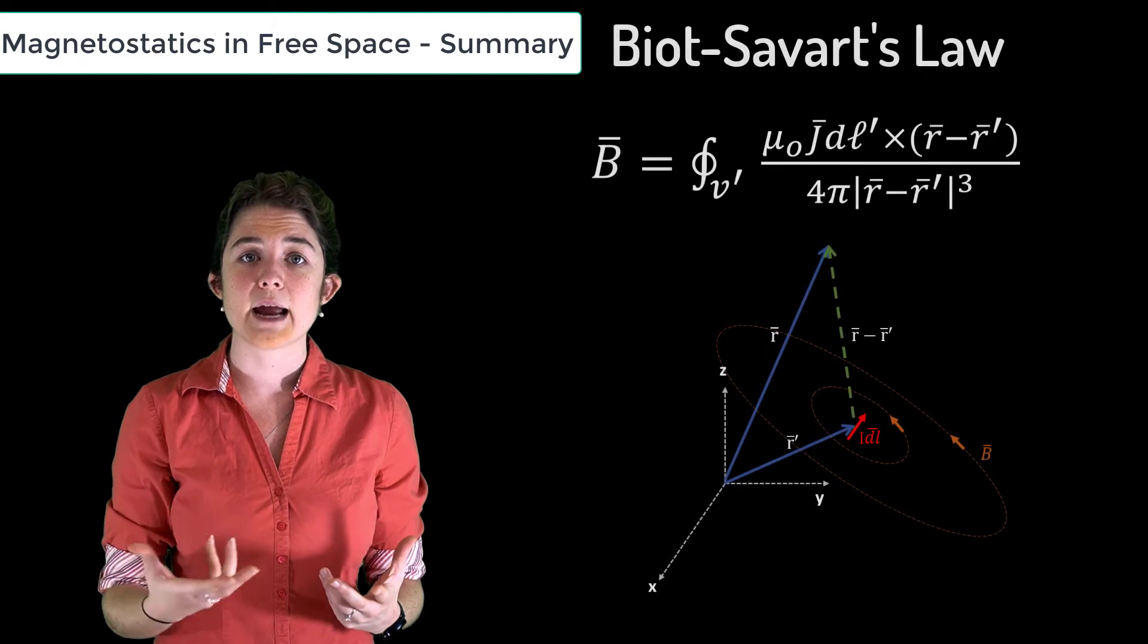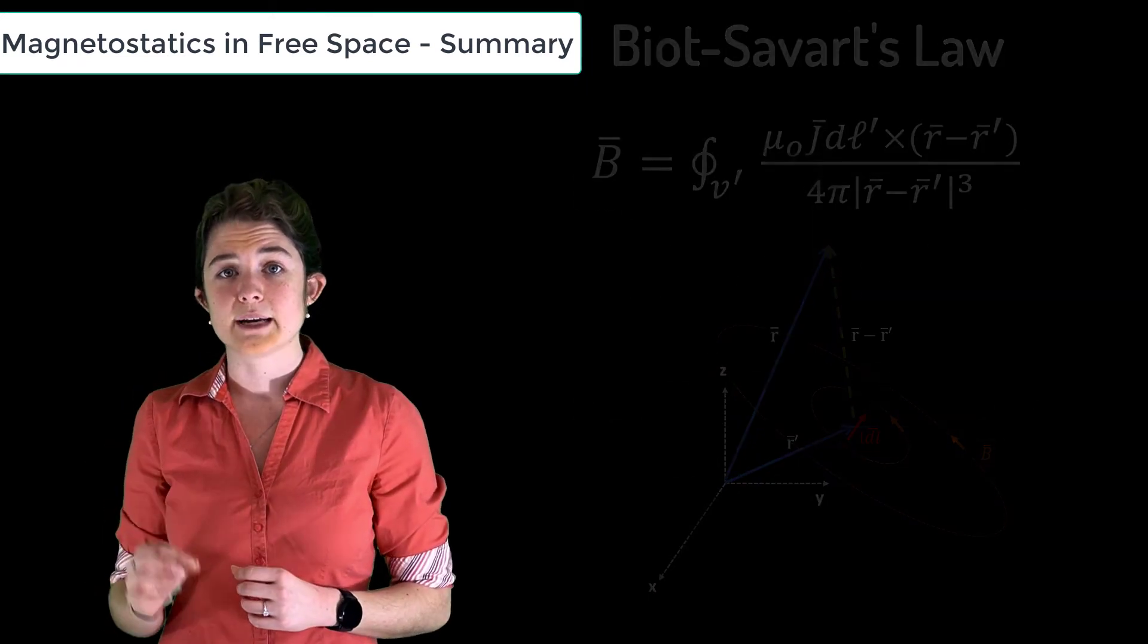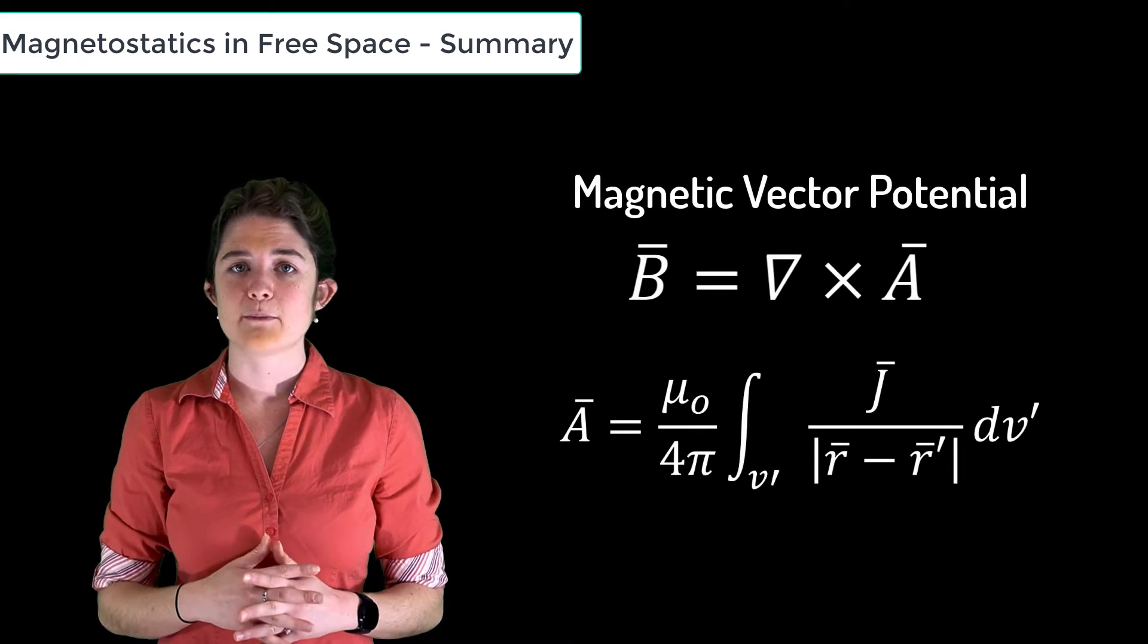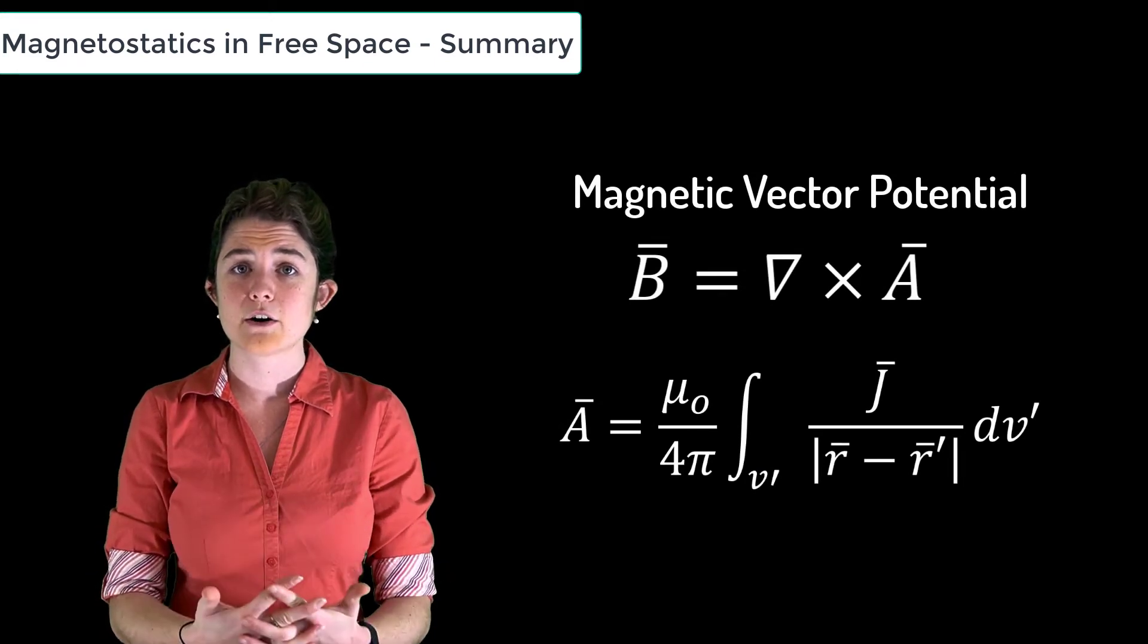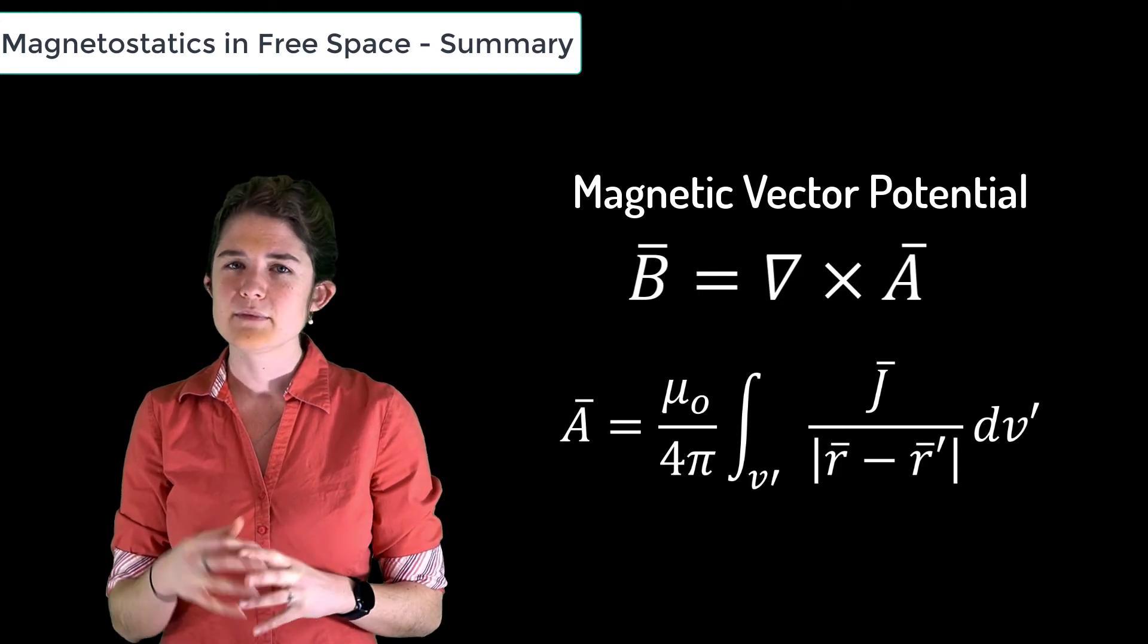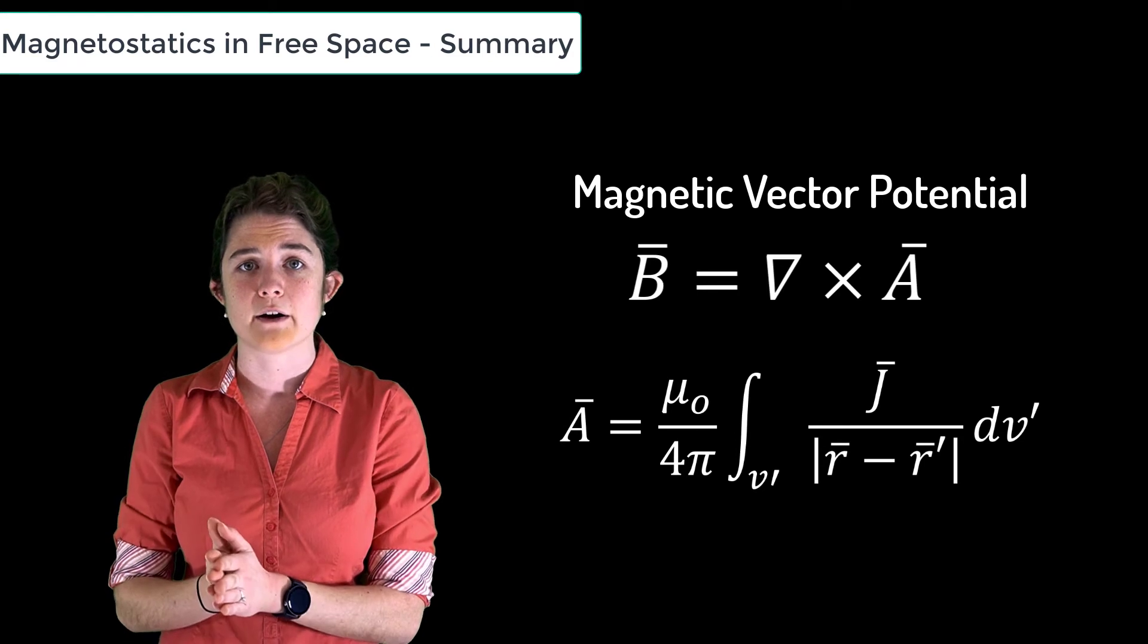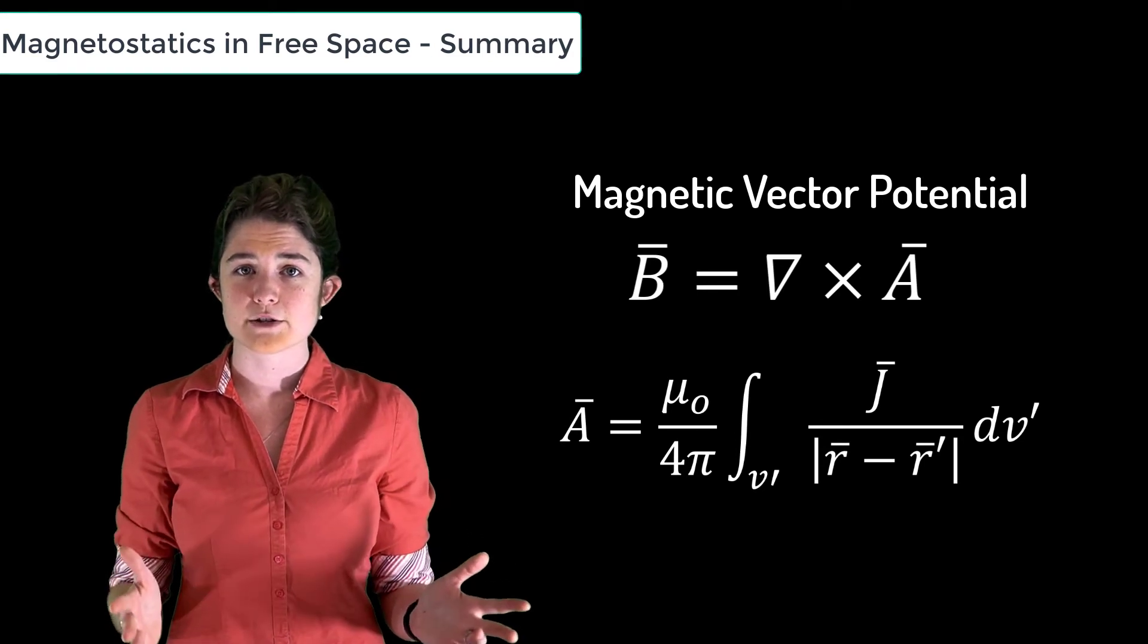We covered Biot-Savart's law, which can be used for any arbitrary current source distribution. We also talked about the magnetic vector potential, which is the mathematical tool defined by setting the curl of the vector potential equal to the magnetic flux density. This is useful in that it simplifies the integrand used in the Biot-Savart law, making many problems easier to solve than if we just applied Biot-Savart directly.